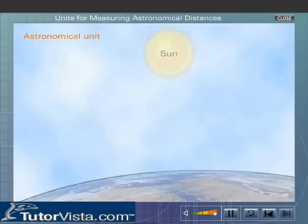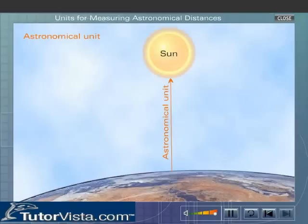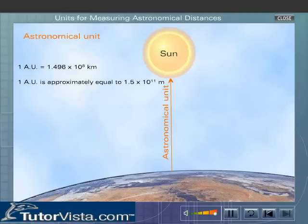Astronomical unit. Astronomical unit is the mean distance between the Earth and the Sun. Abbreviation for the astronomical unit is AU. One AU is equal to 1.496 into 10 to the power 8 kilometres. That is, one AU is approximately equal to 1.5 into 10 to the power 11 metres.